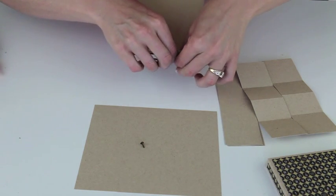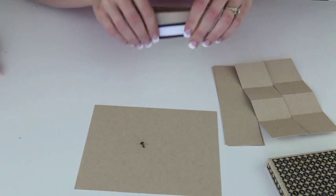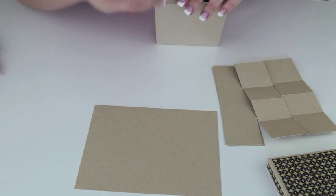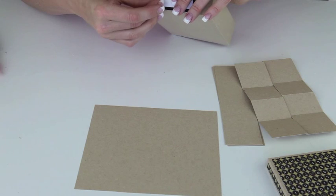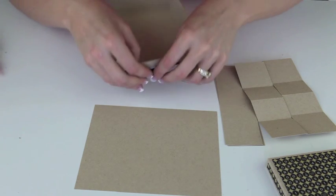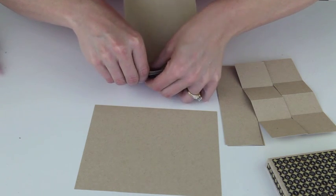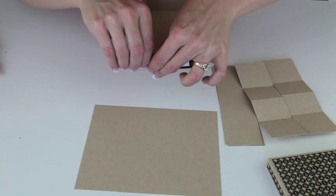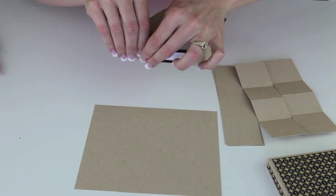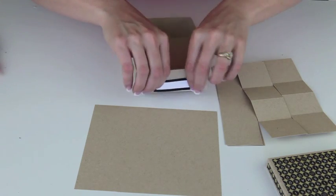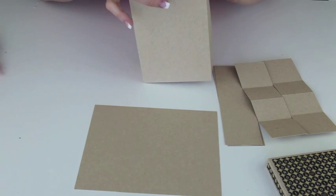And that way you can always remove this book plate and change the label if you'd like. You don't have to make it a permanent fixture. So there's the book plate in place.